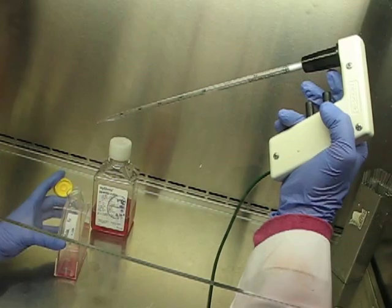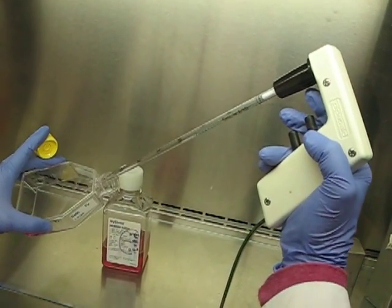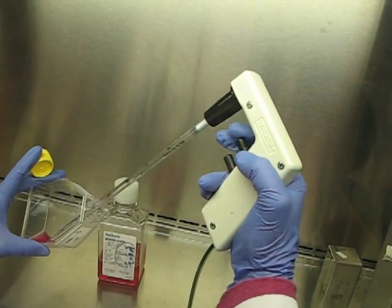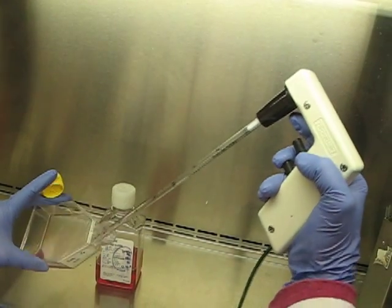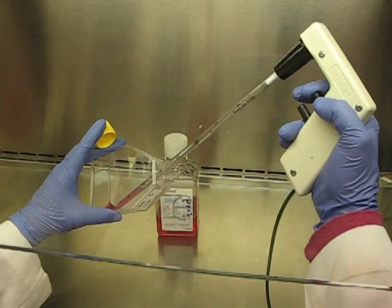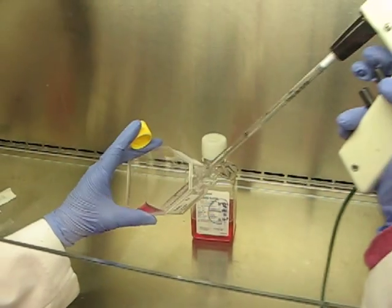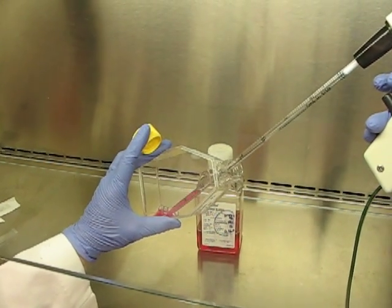And you add it down the side. Now you still have some cells way up here in your flask, you have them all across the surface. You need to wash them down, so you suck up all that media and you gently squirt it out into all the corners to wash down all the cells into the corner. Now I pipette up and down.